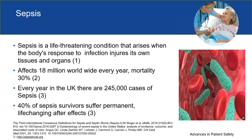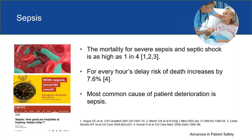One of the biggest causes of patient deterioration is sepsis — a life-threatening condition that arises when the body's response to infection injures its own tissues and organs. It affects 18 million worldwide every year, and in the UK alone there are 245,000 cases of sepsis a year, though this is likely an underestimate as many patients are coded with other pathologies such as pneumonia. 40% of sepsis survivors suffer permanent life-changing effects, the mortality is as high as one in four, and for every hour's delay the mortality increases by 8%.